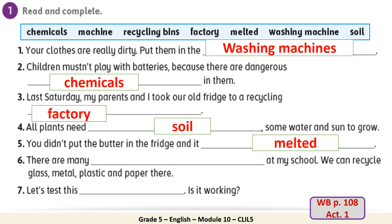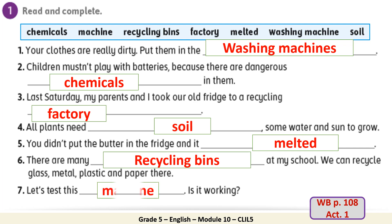Number 6. There are many what at my school? We can recycle glass, metal, plastic, and paper there. Recycling bins. Excellent. Number 7. Let's test this — is it working? Machine. Very good.